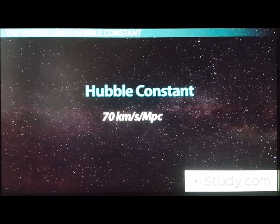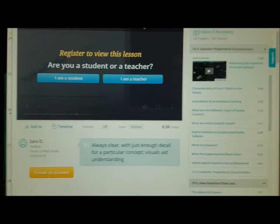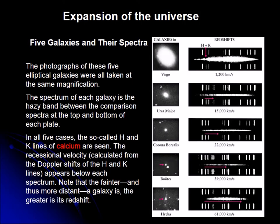This shows five cases of five different galaxies — Virgo, Ursa Majoris, et cetera — and the spectrum obtained for each. If we look at the lines known as the H and K lines of calcium, we see that they sit right here for Virgo, which is not that far from us. But if we go to Ursa Major, we see that this line has now moved to here, and for Corona Borealis, this line has moved even further.